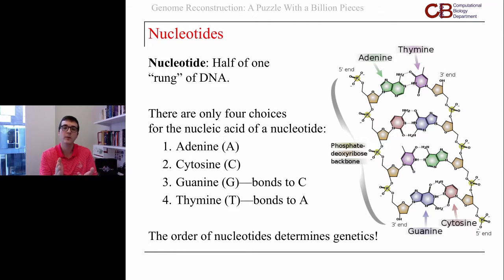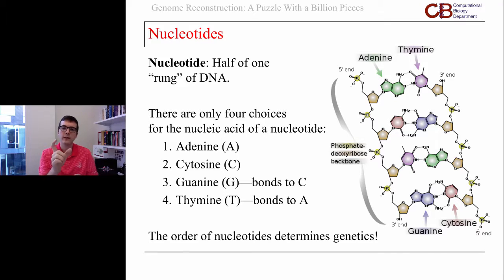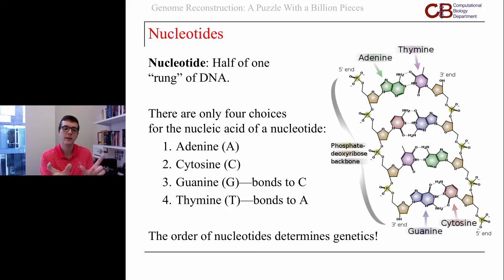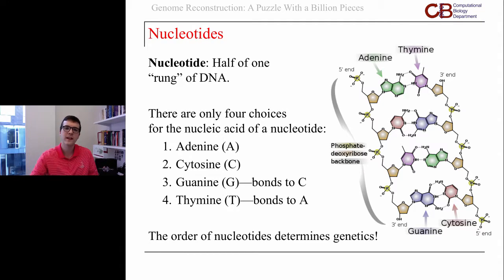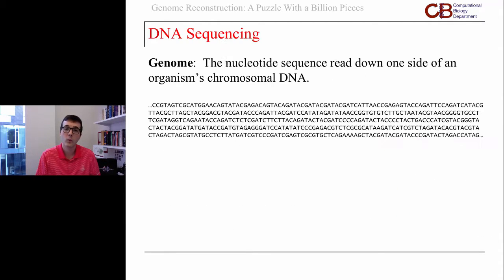The key point is that A always bonds with T, and C always bonds with G. So when a computational person looks at this problem, they say: if I know there's an A here, I get a T for free on the other side. And if I see a G on this strand, then I know I'm going to have a C on the opposing strand. So I can ignore that half of the DNA and simply figure out what the sequence of nucleotides is along one side of the DNA.